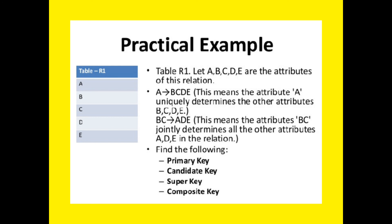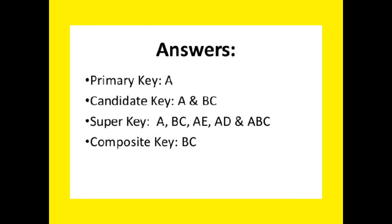Let's have a practical example. There is a table R1 with attributes A, B, C, D, E. A → B, C, D, E, meaning attribute A uniquely determines the other attributes B, C, D, E. B, C → A, D, E, meaning attributes B and C jointly determine all other attributes A, D, E in the relation. Find the primary key, candidate key, super key, and composite key. The primary key would be A. The candidate keys would be A and BC, because both are eligible to become a primary key. The super keys are AB, AC, AE, AD, and ABC, because we can join any two or more columns to form a super key. The composite key is only BC.